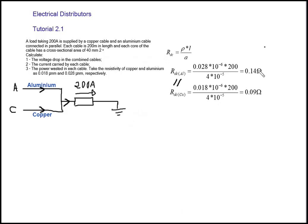Plugging in the values: the resistivity for aluminum and the resistivity for copper is 0.018 × 10⁻⁶, with length 200 meters for each cable. A critical note: the area in the formula must be in meters squared, but it's given in millimeters squared. To convert, you square the milli prefix, so it becomes 10⁻⁶ instead of 10⁻³. Therefore 40 mm² = 40 × 10⁻⁶ = 4 × 10⁻⁵ m². Computing the values gives R_aluminum = 0.14 Ω and R_copper = 0.09 Ω.